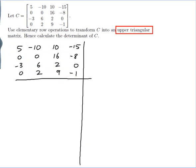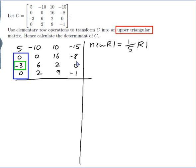Let me do it one column at a time. I want there to be zeros here. I already have a zero here and a zero here, so all I need is to put a zero in the remaining position. I could do that by adding a good multiple of row one to row three, but it's going to be easier to divide row one by five first. So my new row one is equal to one fifth of row one: 1, -2, 2, -3. None of the rest of the rows have changed.